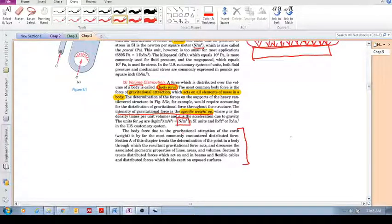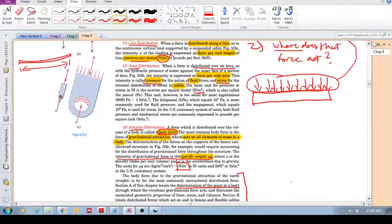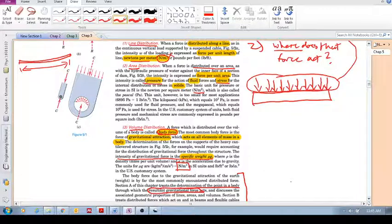The body force due to the gravitational traction of the earth is by far the most commonly encountered distributed force. Section A, which is the next section, treats the determination of the point in a body. Do you see now? The point in a body through which the resultant gravitational force acts. Does it make sense? The first step is calculate the total resultant. First, calculate the resultant gravitational force.